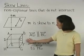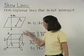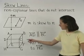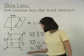In the second diagram shown, we can say that line AD is parallel to line BC, but line AD is skew to line HG.